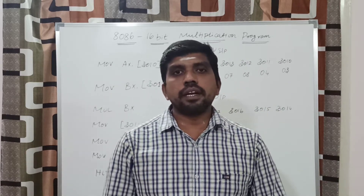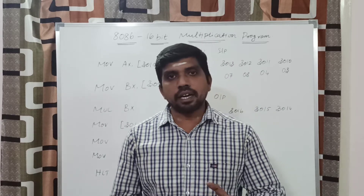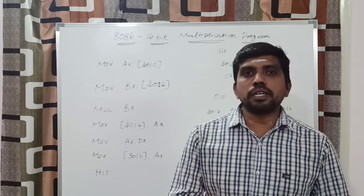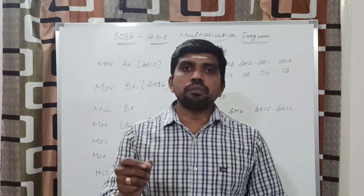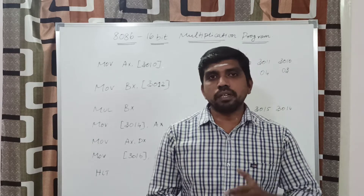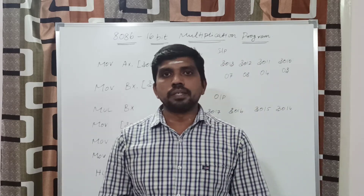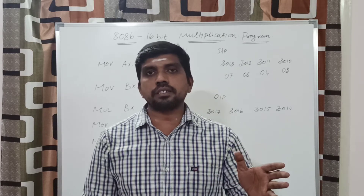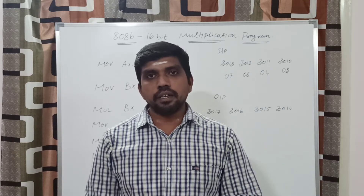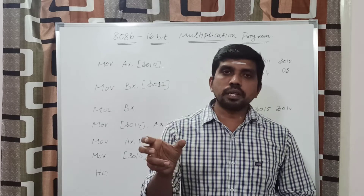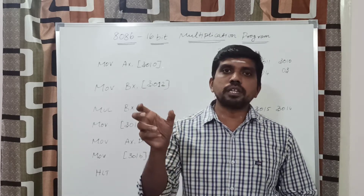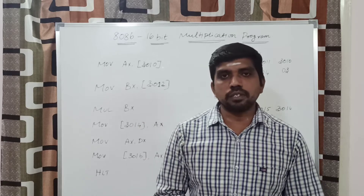In the 8086 microprocessor, we have a direct instruction for performing the multiplication function. In this multiplication function, we are using two 16-bit numbers. The input value is two 16-bit values, but the result is a 32-bit value. This 32-bit value is stored in two registers — the AX register and the DX register. The lower 16-bit value is transferred to the AX register and the upper 16-bit value is transferred to the DX register.